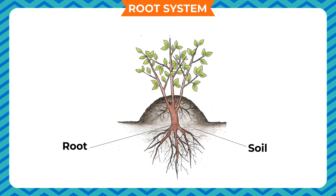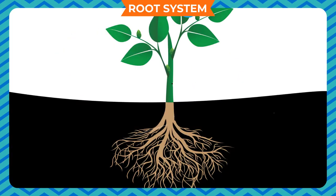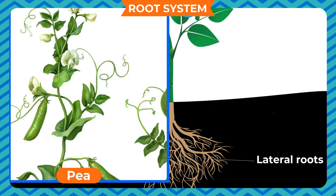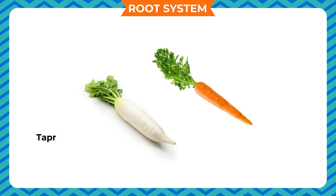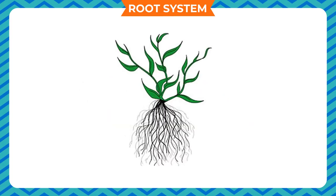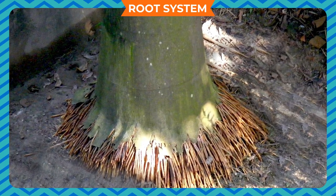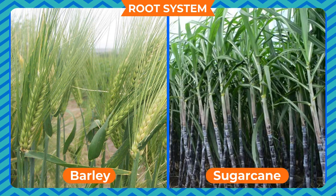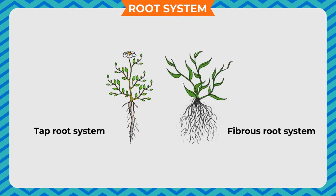The non-green underground part of a plant is the root, which grows downwards and is fixed to the soil. In certain plants, the root system consists of a main root called the tap root and its branches called lateral roots. Tulsi, radish, carrot, and turnip are examples of plants having a tap root system. In some plants, a number of thin fiber-like roots arise from the base of the stem — these are known as fibrous roots. Maize, sugarcane, and barley are examples of plants with fibrous roots.